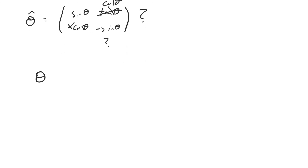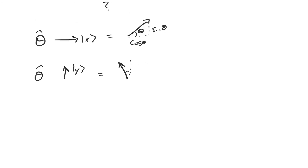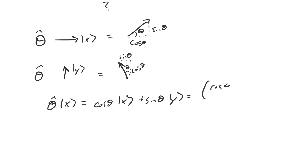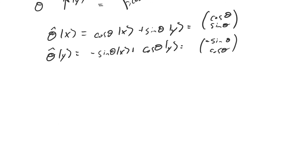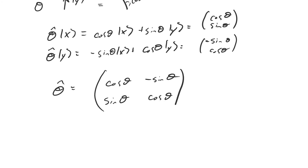The first thing is to figure out how the basis vectors are transformed under this linear transformation. If we rotate the basis vector x by an arbitrary amount theta, it's transformed into the vector cos theta times x plus sin theta times y, and the column vector for that is cos theta, sin theta. The basis vector y is transformed into cos theta times y minus sin theta times x, whose column vector is negative sin theta, cos theta. So the matrix has cos theta, sin theta as its first column and negative sin theta, cos theta as its second column.